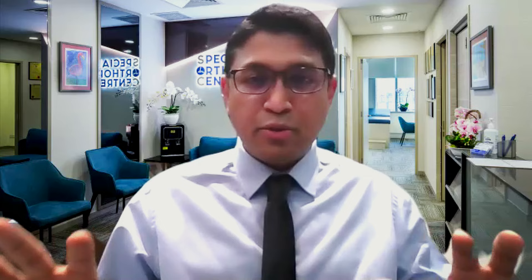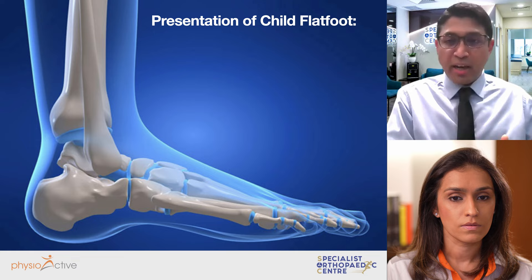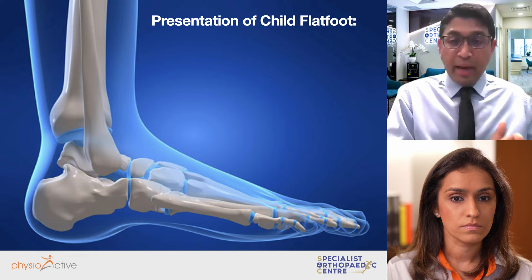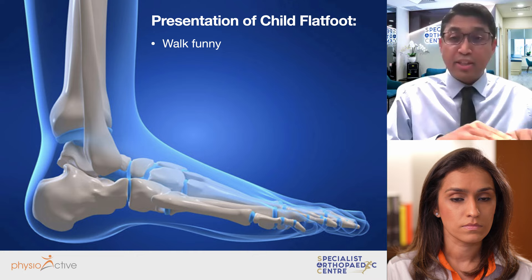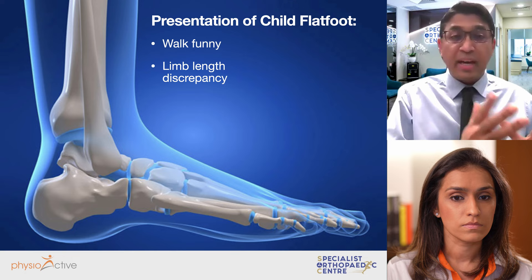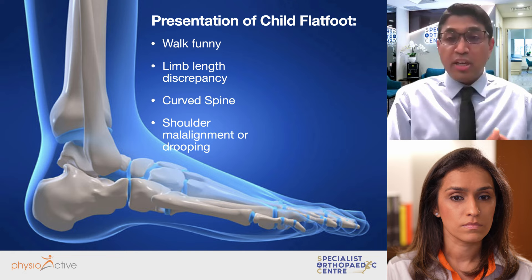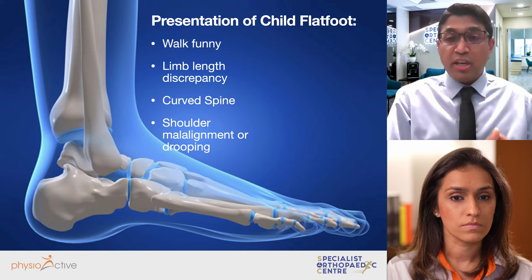We need to understand flat foot and its related problems in adults and in children separately, because the approach and understanding is different. In the child, parents may notice the child walks funny, has limb length discrepancy, one leg shorter than the other, a curved spine, or shoulder malalignment. The child may feel tired after running or sports, or have difficulty finding the right shoes for school or sports.